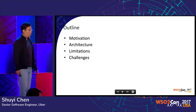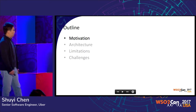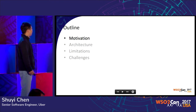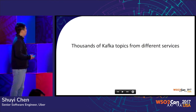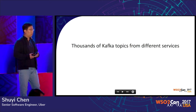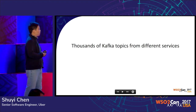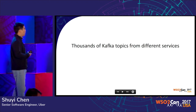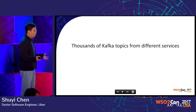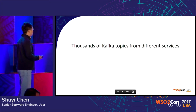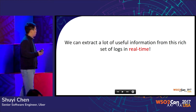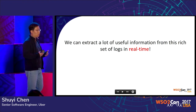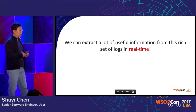This is the outline of the talk. First, let's talk about the motivation. In Uber, we are a data-driven company. We use Kafka as our log aggregator system and stream processing platform. We have thousands of Kafka topics logged in real-time from thousands of microservices. Imagine if we can massage and combine all this useful information, we can extract lots of useful business insights from this rich set of logs.